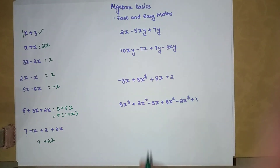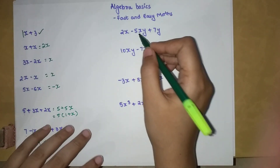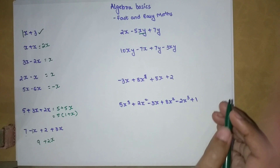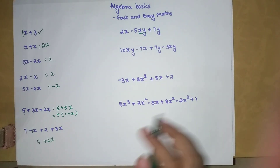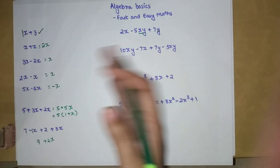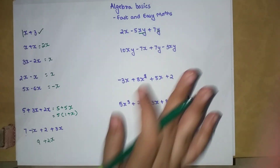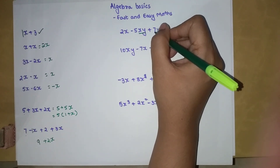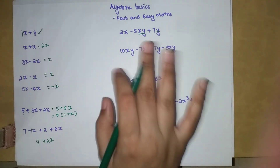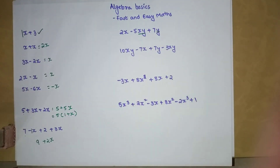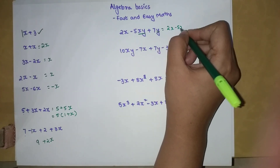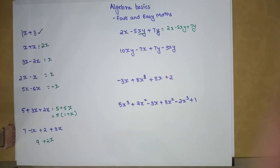Now we have 2x minus 5xy plus 7y. You might wonder if these can be combined — absolutely not, because the variables are different: xy, y, and x are all different. You can only add or subtract terms with the same variable. If they had given plus 2y, then you could add 7y and 2y, but nothing beyond that. So your answer stays as 2x minus 5xy plus 7y.